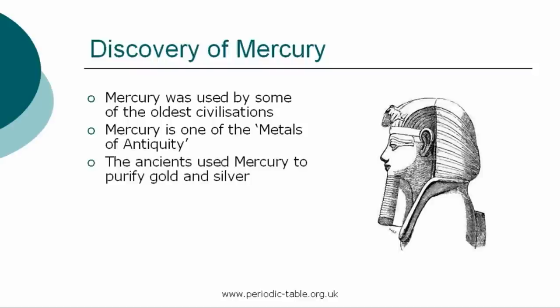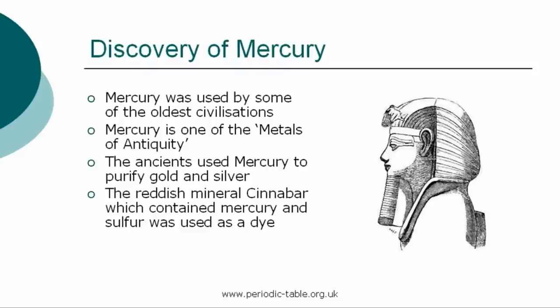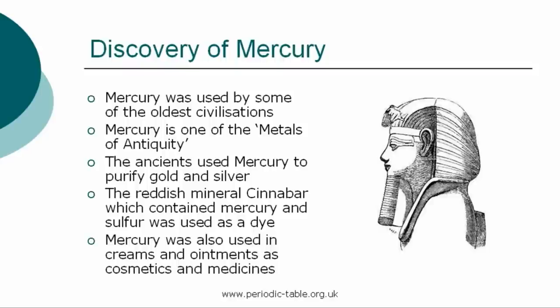Mercury was of great religious and alchemical importance in ancient times. The reddish mineral cinnabar, also referred to as vermilion, which contained mercury and sulfur, was used as a dye. But the main use of mercury was to purify gold and silver. It was also used in creams and ointments as cosmetics and medicines.